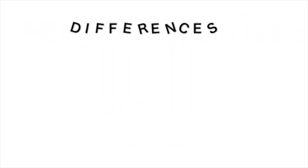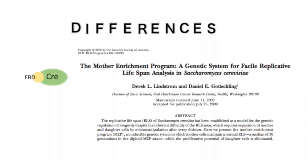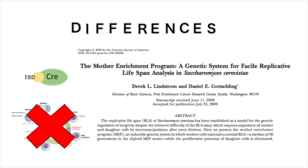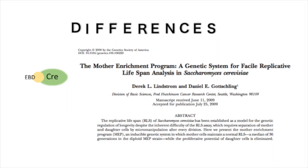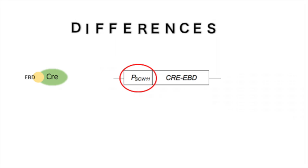There are some differences between the usual Cre-LoxP system and its involvement in SCRAMBLE. The team used the Cre-LoxP mediated system with an oestrogen binding domain first described in 2009 in a paper titled 'The Mother Enrichment Programme', in which Lindstrom and Gottschling describe a system whereby the daughter cell's ability to proliferate is removed. This allows for the replicative lifespan — the number of times an individual cell divides before it undergoes senescence — of the mother cell of S. cerevisiae to be analysed. This oestrogen binding domain allows the system to be inducible on demand rather than continuously active, controlled by the daughter cell promoter SCW11.